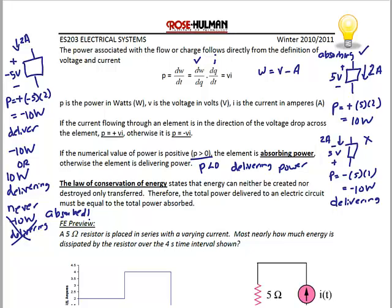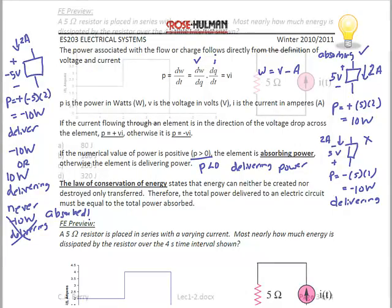The law of conservation of energy states that energy can neither be created nor destroyed, only transferred. Therefore, the total power delivered to an electric circuit must equal the total power absorbed. Once we start doing circuit analysis, we use this law frequently to check our work. If we get answers for voltage, current, and power for a circuit and it does not obey the law of conservation of energy, we know that we've made a mistake somewhere.